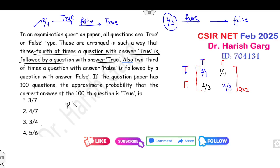Your target is to find the probability of true for the 100th question. What about the first question, second question? We never know, but that is nothing but the stationary probability. Is it okay?